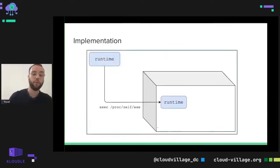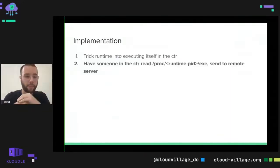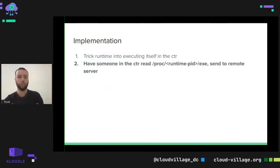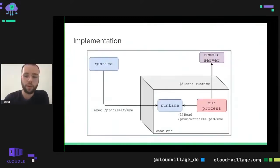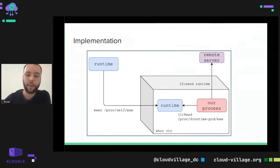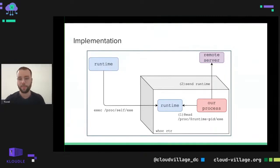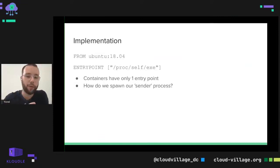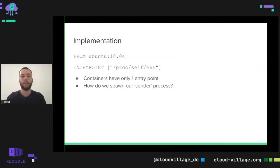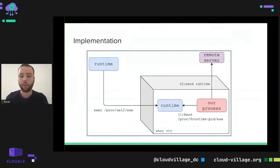We have a way to trick the runtime to execute itself inside the container. The second step is to have someone in the container read that runtime process's /proc/PID/exe and send it to a remote server. We have the runtime tricked to execute itself inside the container, and then our process reads the runtime executable through /proc/runtime-PID/exe and sends it to our remote server. However, containers can only have one entry point — they're made to run one process. So if we set the entry point to /proc/self/exe, we have no way to spawn our process that is supposed to send the runtime.